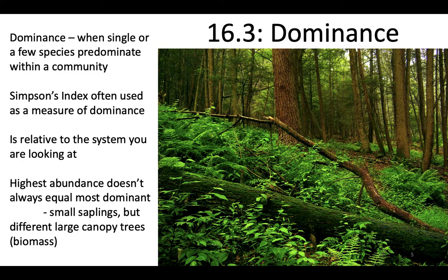Now let's talk about dominance. Dominance is when a single or a few species predominate within a community. Ecologists often use Simpson's index as a proxy for measuring dominance, but dominance is always relative to the system you're looking at. A species dominant in one system doesn't mean it's always dominant in every environment. High abundance of an individual species doesn't always equal the most dominant — you can measure dominance by individual counts using Simpson's index, or you can measure it by biomass.